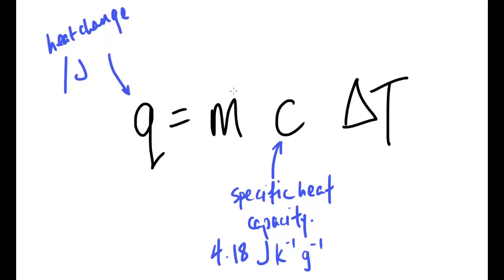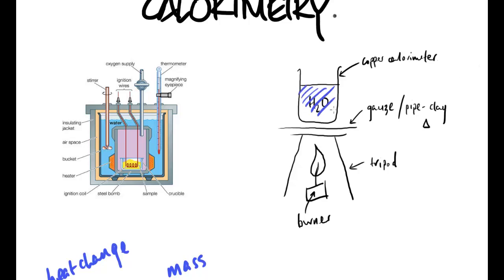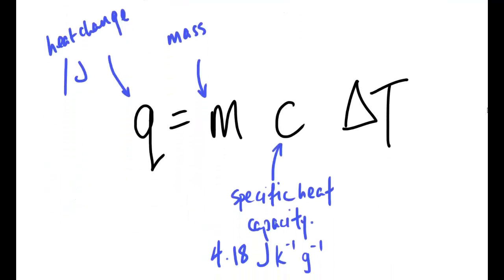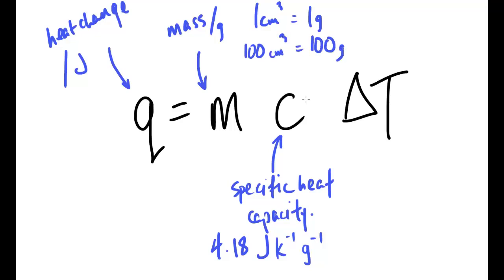M — you might guess this one — it's mass. Invariably what we're dealing with is the mass of the thing being heated, so normally the mass of water. It's strange to use mass rather than volume, but that's how the equation works. Mass is measured in grams. For every one centimetre cubed of water you have, that equals one gram. So 100 cm³ equals 100 grams — just knock the cm³ off and stick grams on.